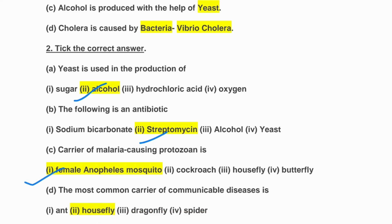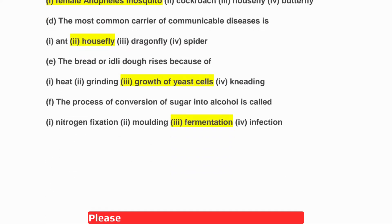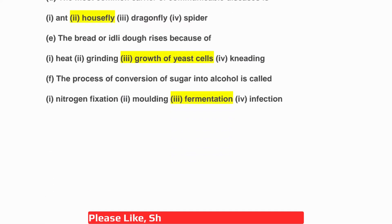D: The most common carrier of communicable diseases is — first ant, second housefly, third dragonfly, fourth spider. The correct answer is second: housefly. E: The bread or idli dough rises because of — first heat, second grinding, third growth of yeast cells, fourth kneading. The correct answer is growth of yeast cells.